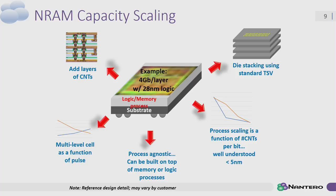On a 28 nanometer process, we're getting 4 gigabits per layer in roughly 100 square millimeter die. With four layers, we have a 16 gigabit device — a step ahead of today's mainstream DRAMs. We also support through-silicon via die stacking for additional capacity expansion. We're initially targeting DRAM capacities, but taking on flash is not impossible. We have a multi-level cell future as well, and the capacities scale accordingly.